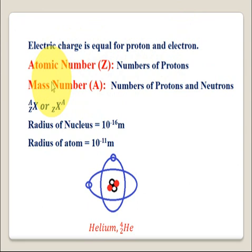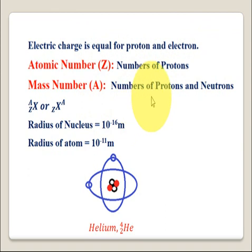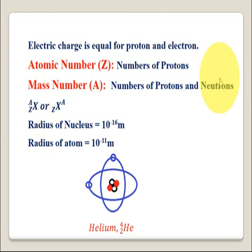There are two terms related to atom: atomic number, denoted by Z, and mass number, denoted by A. Atomic number indicates the number of protons present in the atom, and mass number indicates the sum of the numbers of protons and neutrons present in the atom. Elements are represented symbolically where X is the element, Z is the atomic number indicating number of protons, and A is the mass number which is the sum of protons and neutrons.